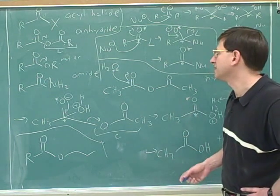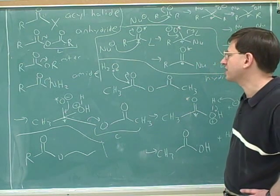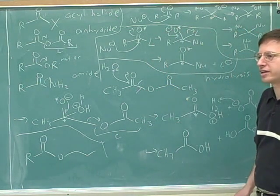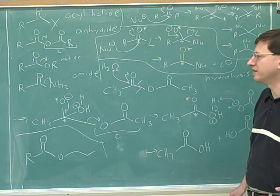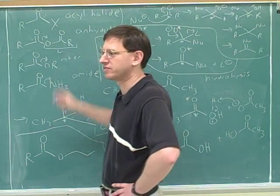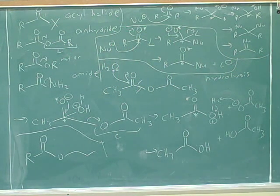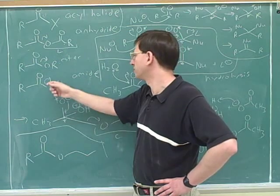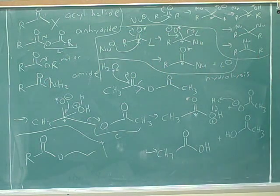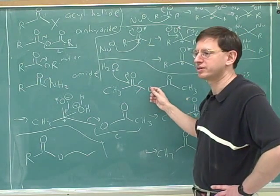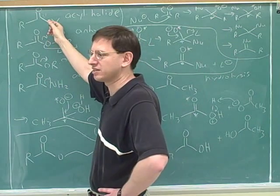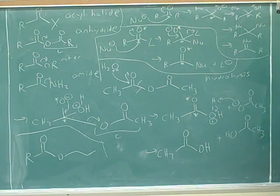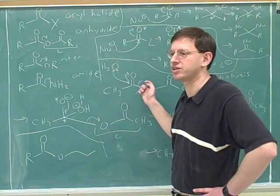Hydrolysis is definitely a key reaction—it means adding water to break a bond. At this part of the course, we're always going to be breaking the carbonyl-L bond. We're using the water to break the carbonyl-L bond, where L can be any of these groups. We can hydrolyze an anhydride, an ester, an amide, or pretty much any of these. There are many different examples of hydrolysis because there are many different L groups—a halogen, OR, or NH2.